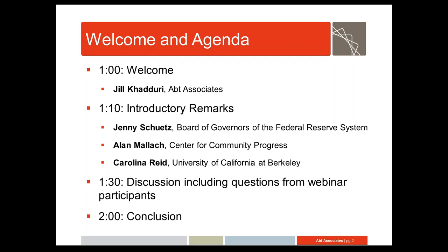Alan Malik is a senior fellow at the Center for Community Progress in Washington, D.C. A city planner, advocate, and writer, his books include Bringing Buildings Back from Abandoned Properties to Community Assets. Alan was a member of the Study's Expert Panel. And then we'll have Carolina Reed, who is an assistant professor in the Department of City and Regional Planning at the University of California, Berkeley. Carolina specializes in housing and community development with a specific focus on access to credit and the impact of foreclosures on low-income and minority communities.